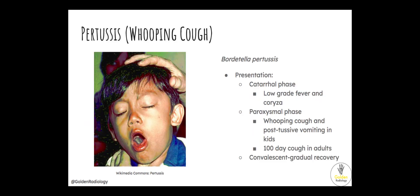Pertussis, or whooping cough, is caused by the bacteria Bordetella pertussis. The presentation has two phases: the catarrhal phase, characterized by low-grade fever and coryza, and the paroxysmal phase, characterized by whooping cough and post-tussive vomiting in kids, and the so-called 100-day cough in adults. This cough eventually goes away over time. Thanks for joining us — we'll see you next time.